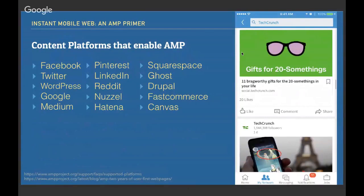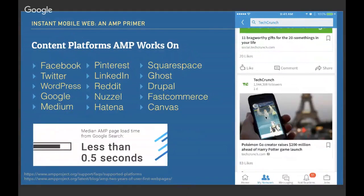Content platforms enabling AMP include most of the big ones you'll recognize: Facebook, Twitter, WordPress, Google, Pinterest, and LinkedIn. When your web app is optimized using AMP, you immediately reap the benefit when your content is shared across these platforms. Especially with WordPress, where content is user-powered, you still get that instant-load benefit. The AMP indicator — a tiny lightbox icon — appears below the content, as seen here with TechCrunch in LinkedIn. The median AMP load time from Google Search is less than 0.5 seconds.